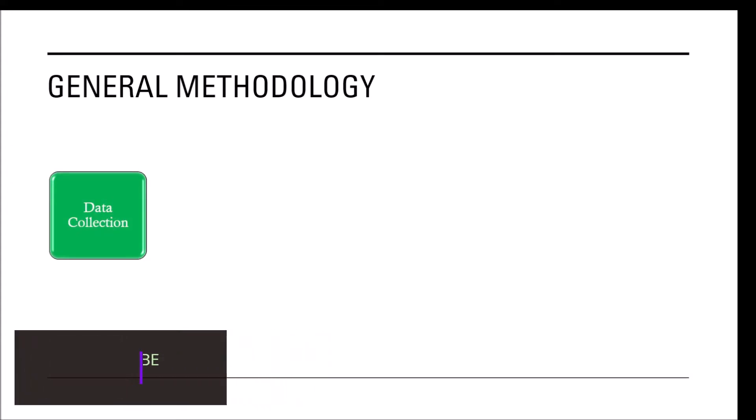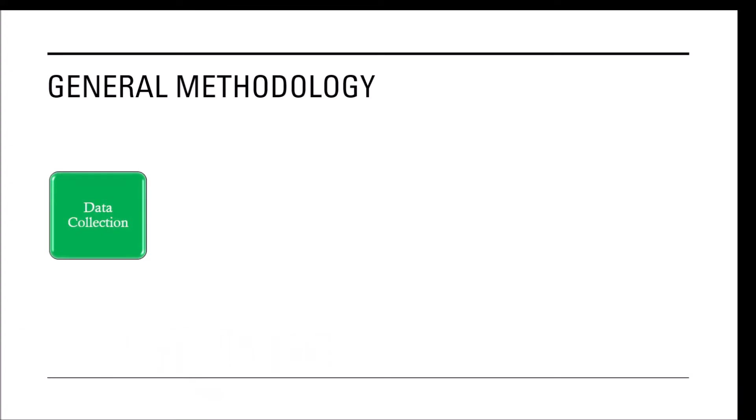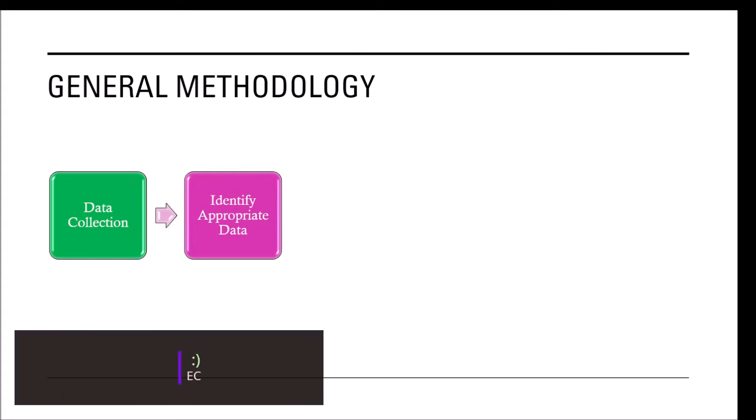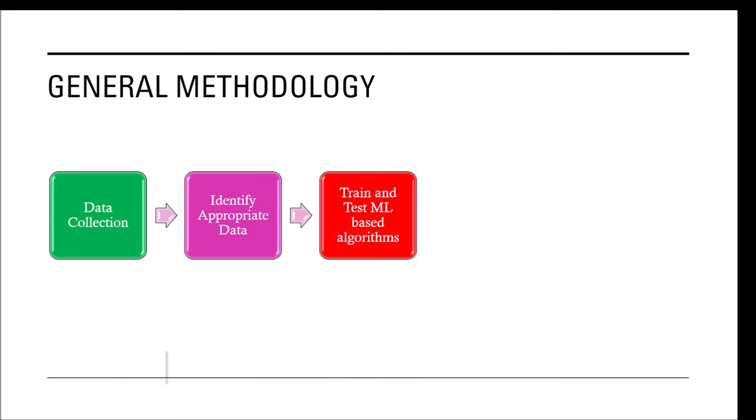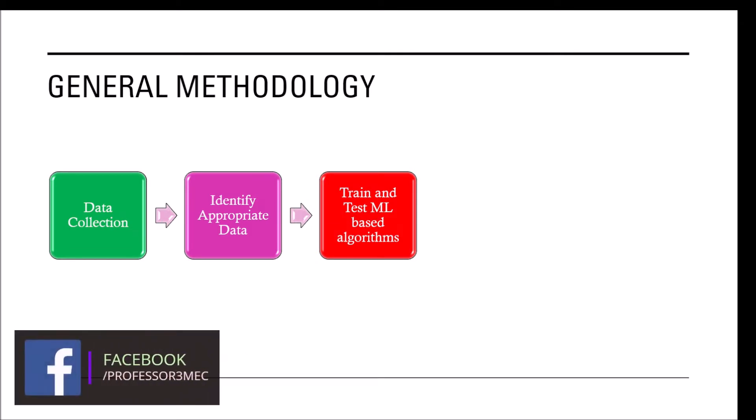You always start with data collection and see how much data is available, and then you identify appropriate data which will be needed for that specific problem. You first select a machine learning or deep learning algorithm, and then you train and test the machine learning algorithm to see if it is able to predict the behavior which you really want to achieve.